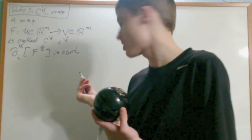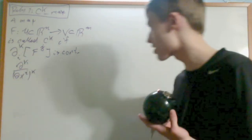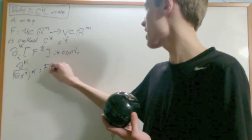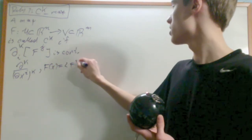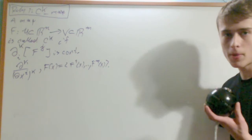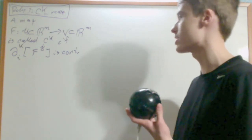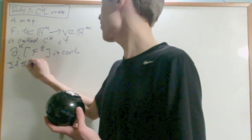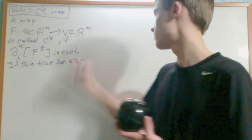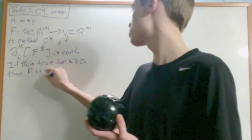To clarify: the partial derivative with respect to the ith coordinate, taken to kth order, applied to the coordinate functions Fj — which decompose the output of F into its components. In short, this means F is k times differentiably continuous. And if this is true for all k ≥ 0, then F is smooth.